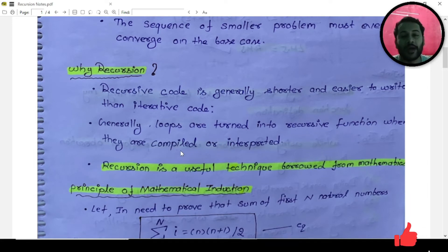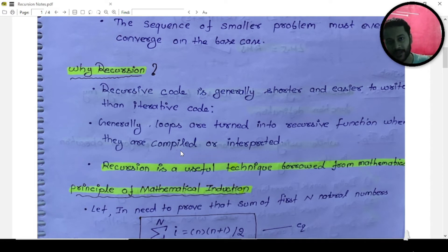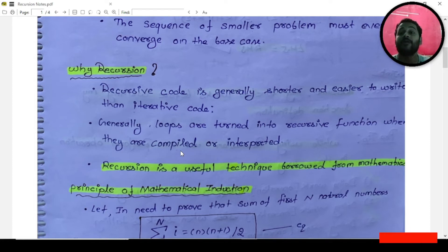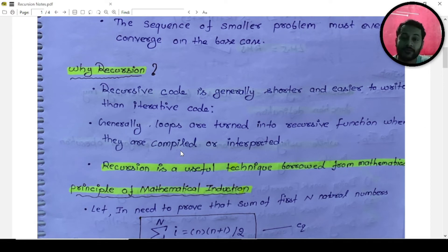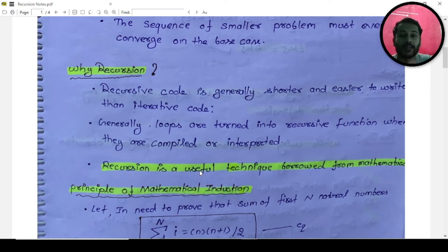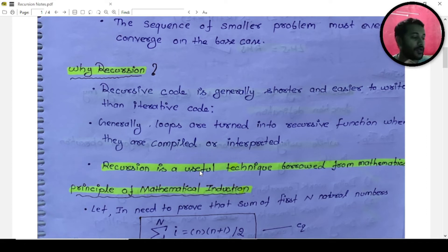Generally, loops are turned into recursive functions when they are compiled or interpreted. If you're writing loops — the iterative approach — when you compile your code it automatically gets converted into recursive calls or recursive methods. The main important point is that recursion is a useful technique borrowed from mathematics, specifically mathematical induction from 10+2.